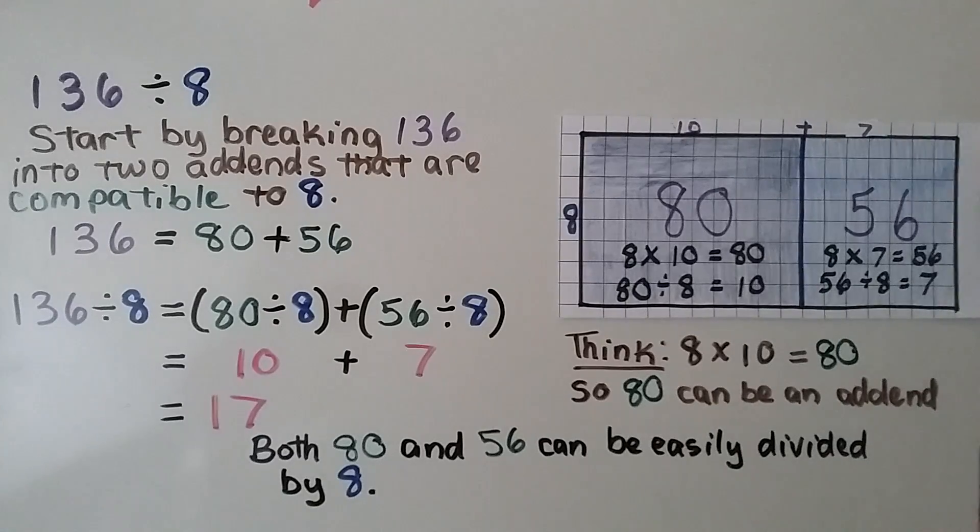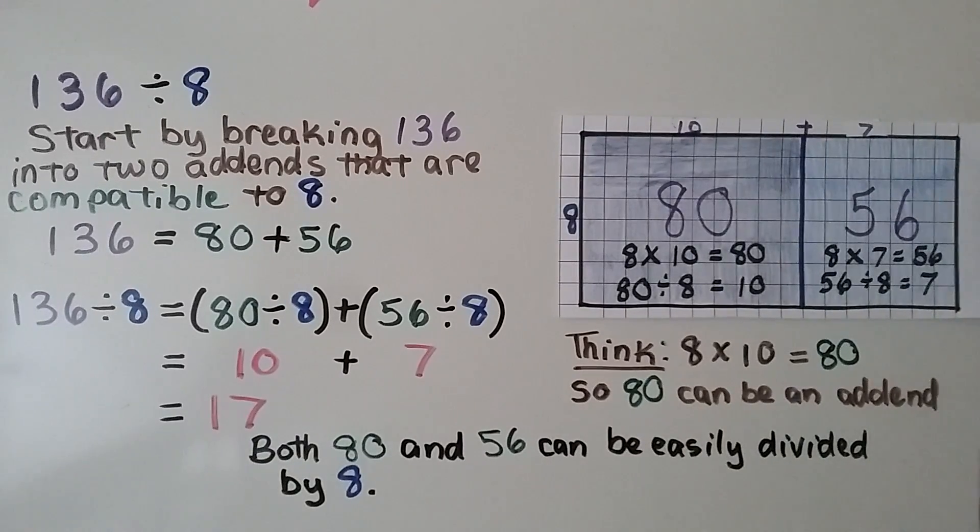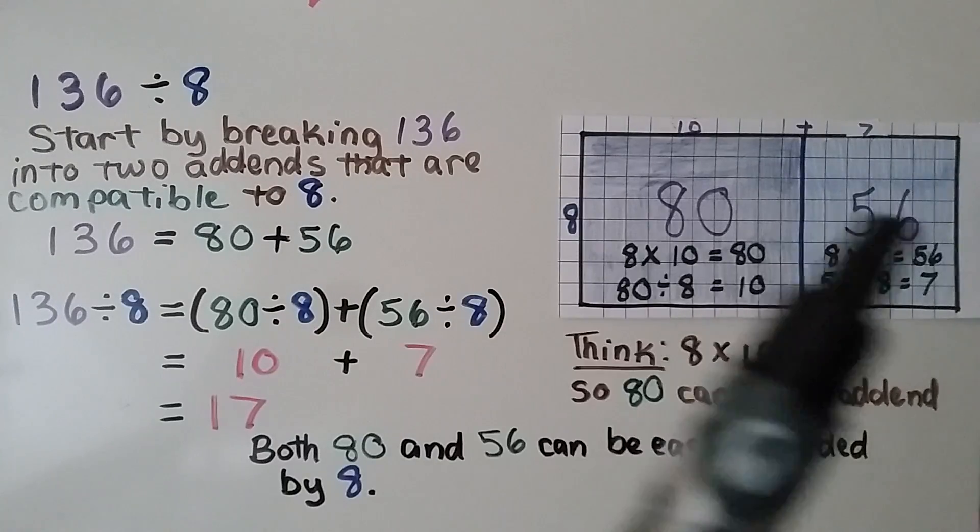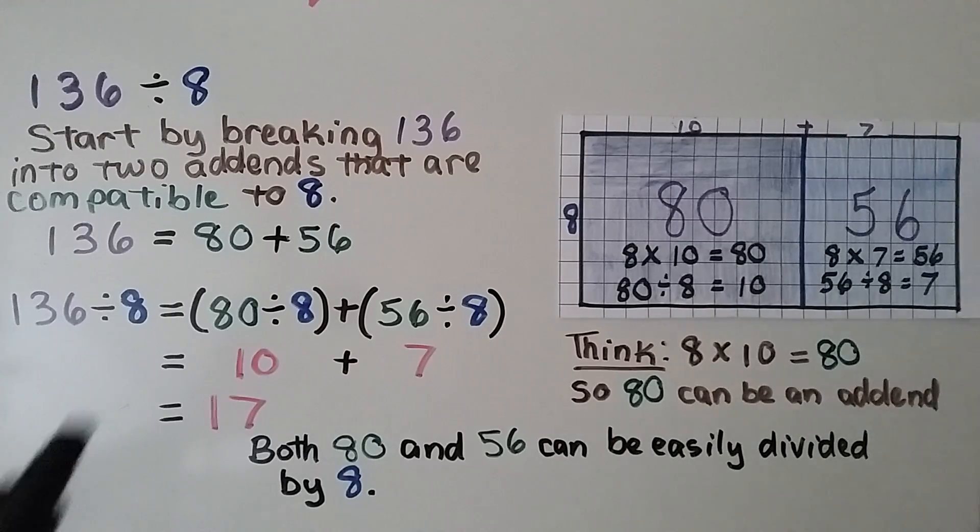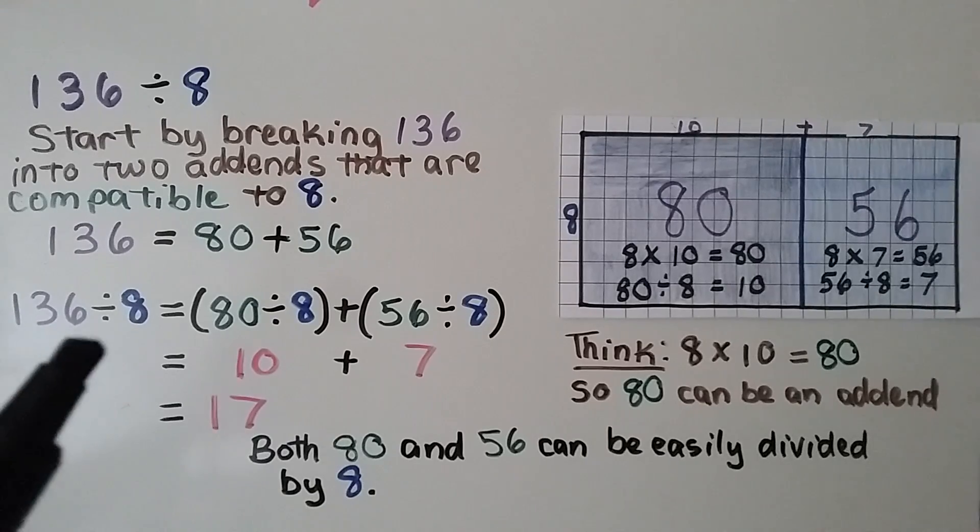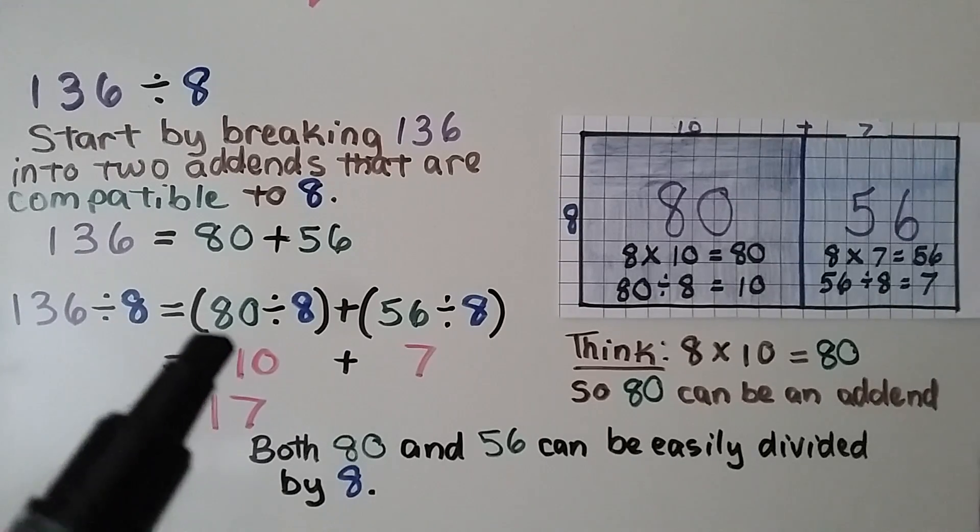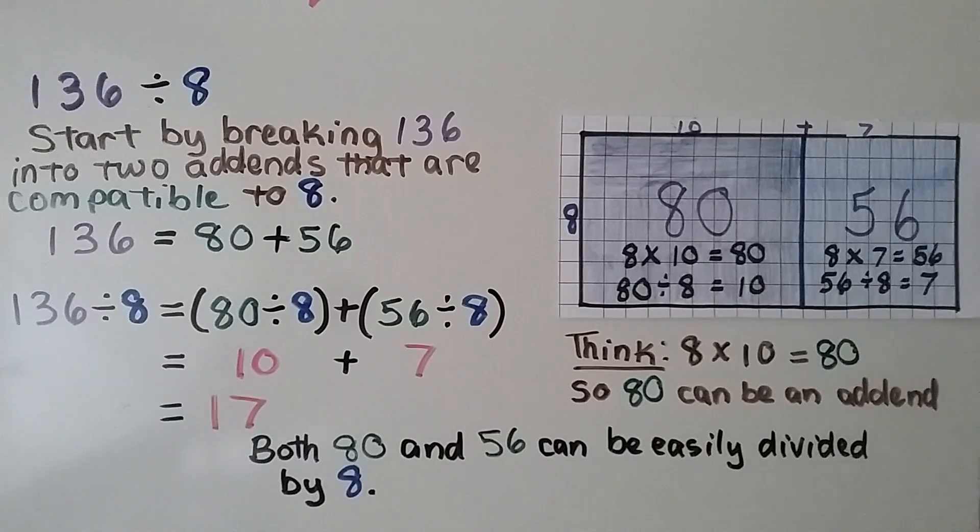Here we have 136 divided by 8. We start by breaking 136 into two addends that are compatible to 8, our divisor. We can use 80 plus 56.